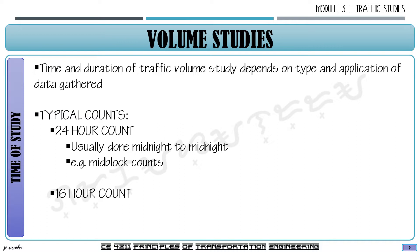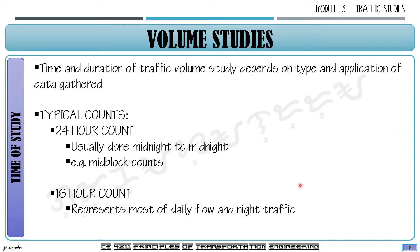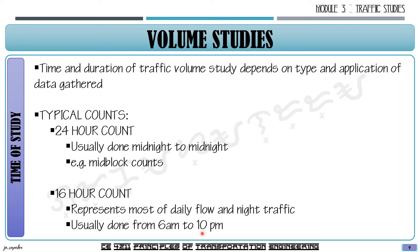Next is the 16-hour count, which usually represents most of our daily flow including nighttime traffic. If a 24-hour count is not feasible, a 16-hour count can still capture daily and nighttime flow. It is usually done from 6 a.m. to 10 p.m., though this can vary depending on location — for residential areas, 6 a.m. to 10 p.m. is typical, but business areas may have different time ranges.